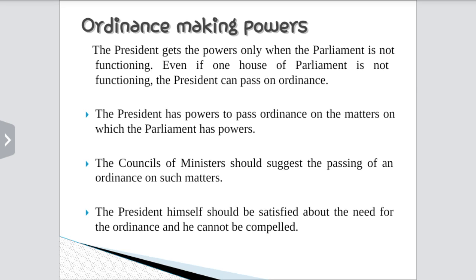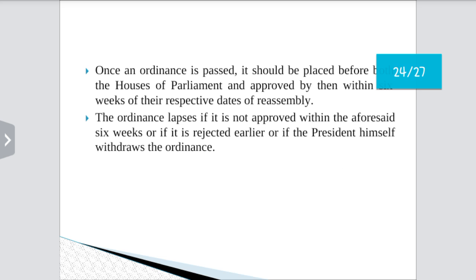Ordinance-making power of the President: The President gets this power only when Parliament is not functioning. The President has the power to pass an Ordinance on matters on which Parliament has power, provided the Council of Ministers suggests passing of the Ordinance, and the President himself is satisfied about the need for it. Once an Ordinance is passed, it must be placed before both Houses of Parliament and approved within six weeks of their respective dates of reassembly. The Ordinance lapses if not approved within six weeks, if rejected earlier, or if the President himself withdraws it.